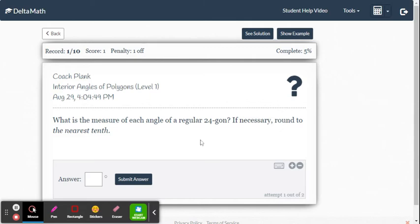This time, it says what is the measure of each angle of a regular 24-gon, if necessary round to the nearest tenth. So you've got to be careful on these problems. Nearest tenth, that's one decimal place.